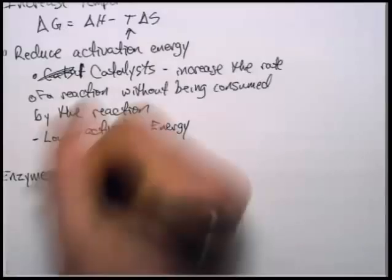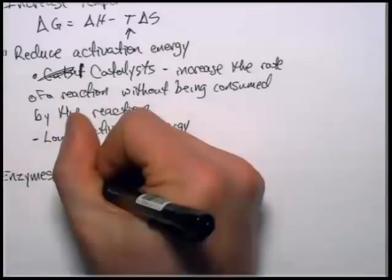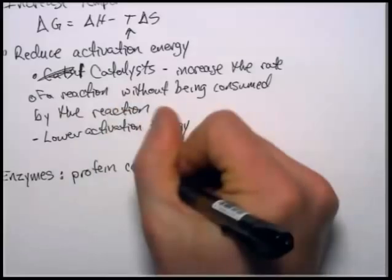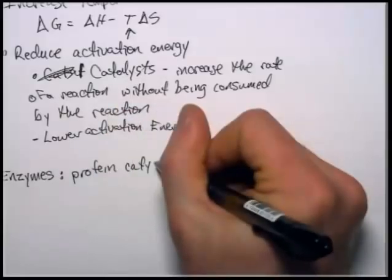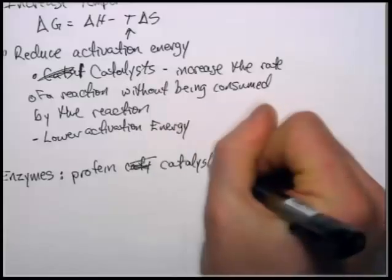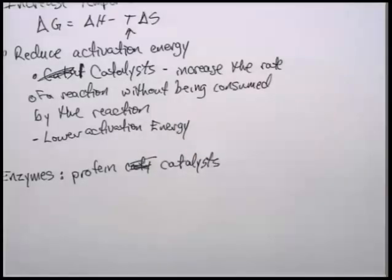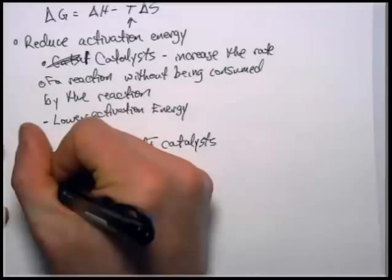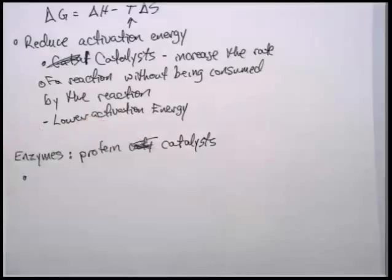Enzymes are what we call proteins when they're acting as catalysts. One of the most important roles of proteins is to act as a catalyst, and when our catalyst is a protein, we call that an enzyme. Most proteins that end in '-ase' fit as enzymes. For example, in the lab you've used amylase, which is an enzyme that helps break down starch into glucose monomers. These enzymes are able to lower the activation energy in a few key ways.